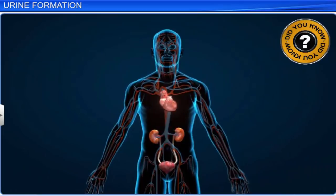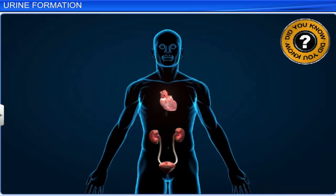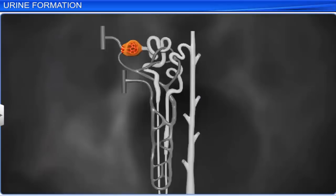Did you know that on average, the human kidney filters about 1100 to 1200 milliliters of blood per minute, which is about one fifth of the blood pumped out by each ventricle of the heart in a minute? The amount of filtrate formed in the Bowman's capsule of a nephron due to glomerular filtration every minute is called the glomerular filtration rate, or GFR, which in a healthy individual is about 125 milliliters per minute, or 180 liters per day. The blood pressure in the capillaries acts as a major force in glomerular filtration. Besides, there are certain intrinsic mechanisms in the kidneys that auto-regulate the GFR.